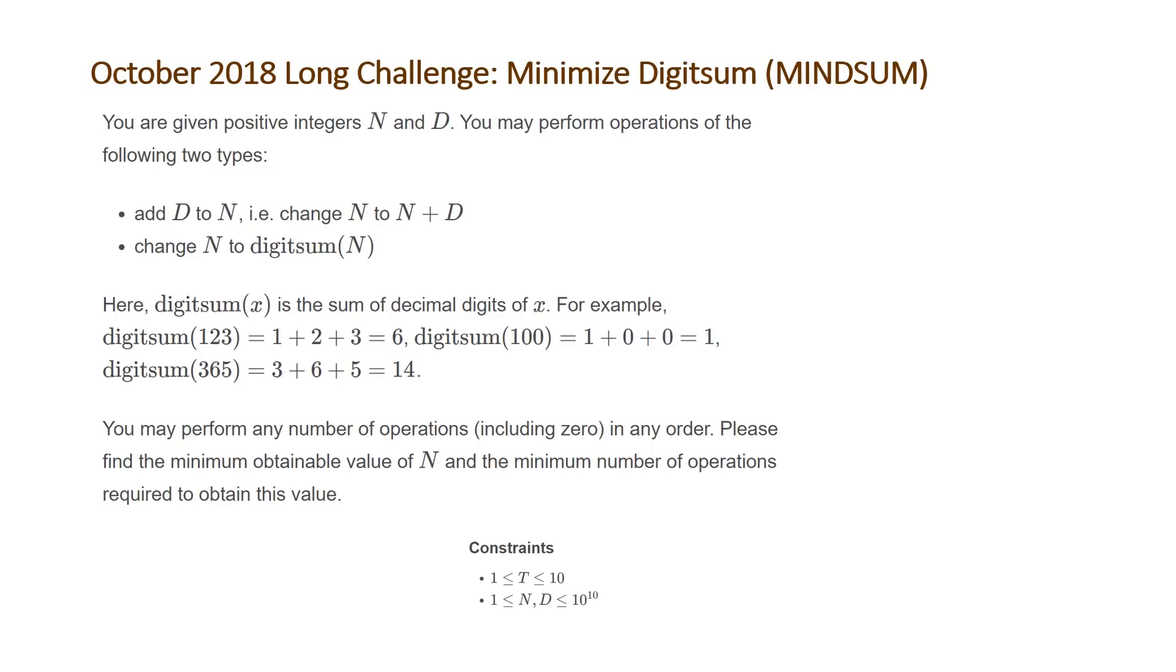The problem states you are given positive integers n and d. You may perform operations of the following two types: you may add d to n, i.e. change n to n plus d, or change n to digit sum of n.